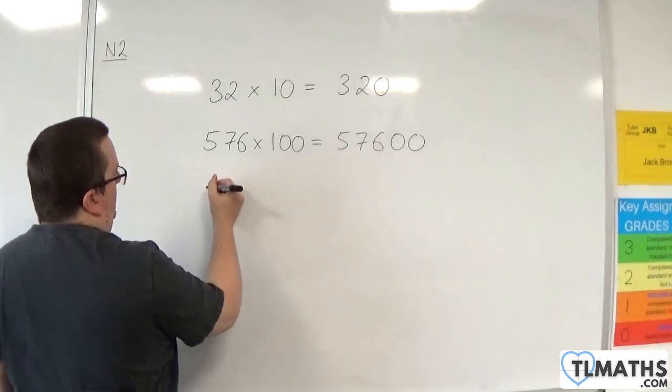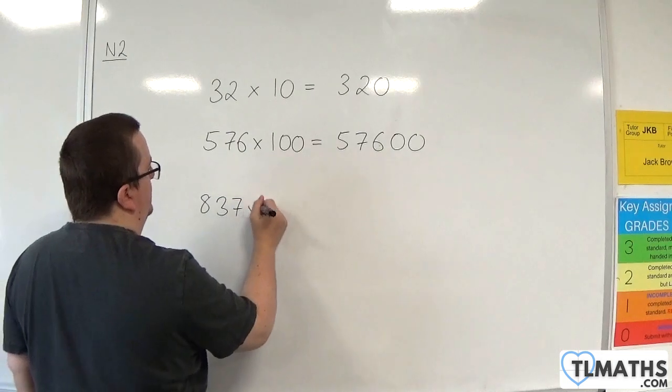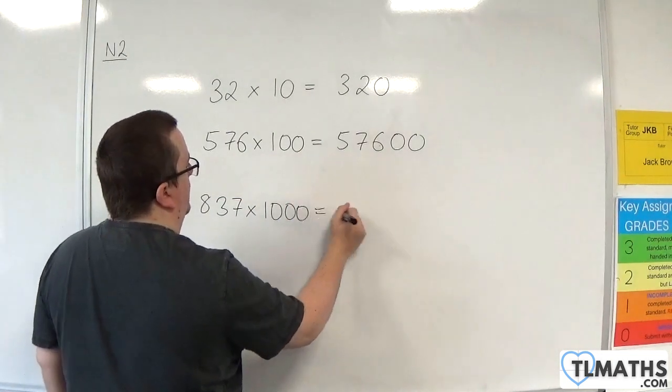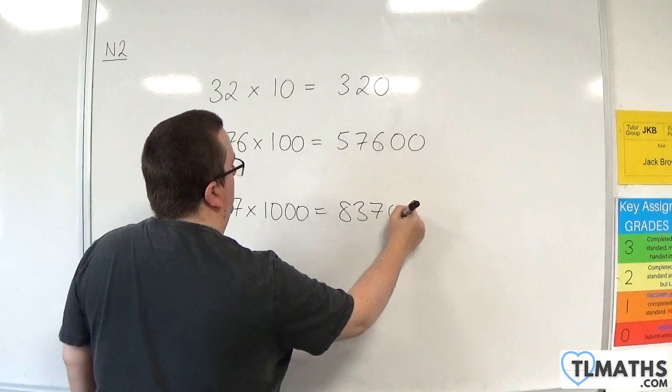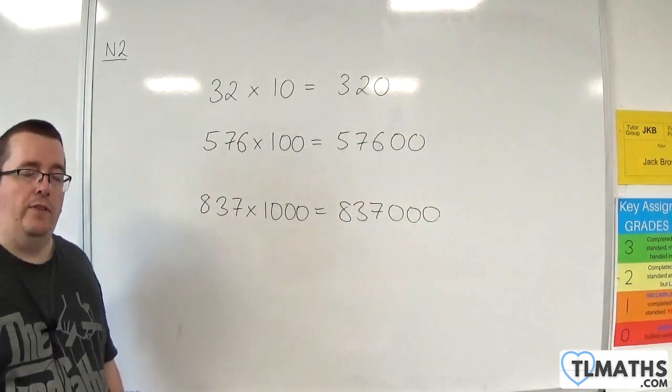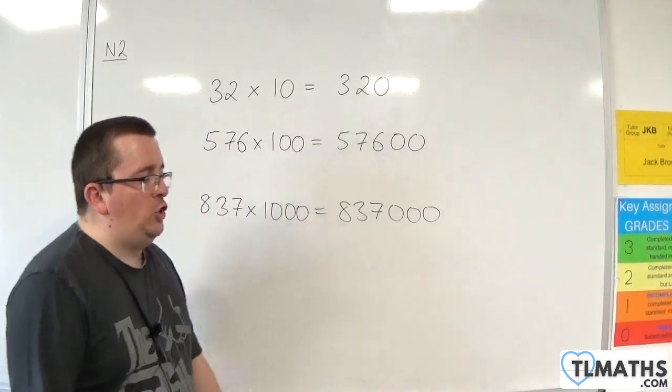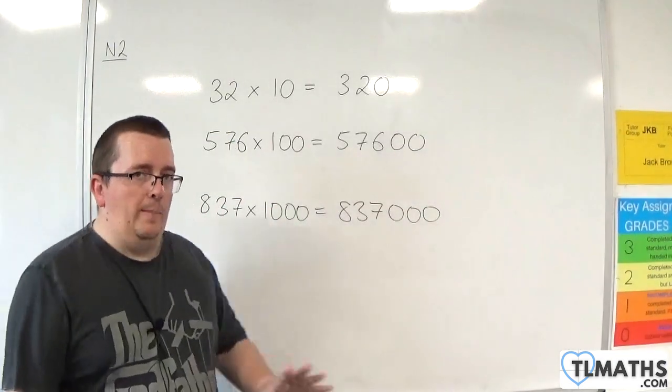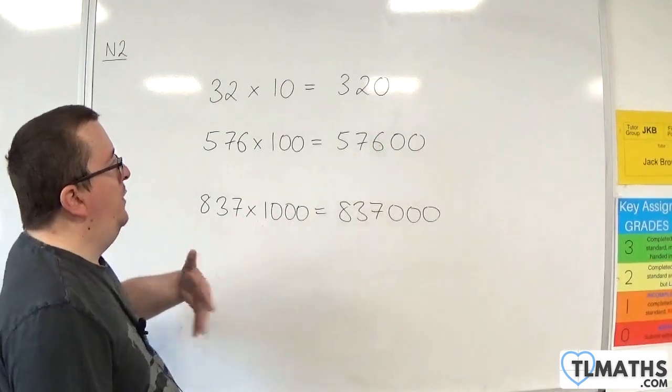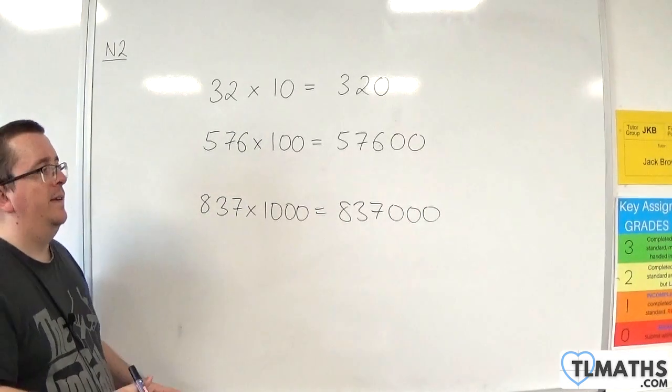Let's continue this on. 837 times 1,000. Well, that will be 837, then you stick three zeros on the end. So we have 837,000. Now, essentially, what is happening? We talk about just putting a zero on the end or putting two zeros on the end or putting three zeros on the end.